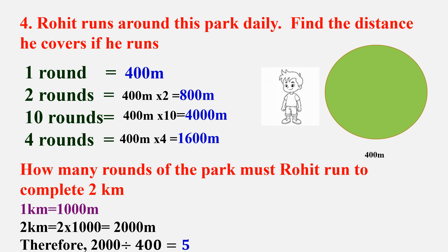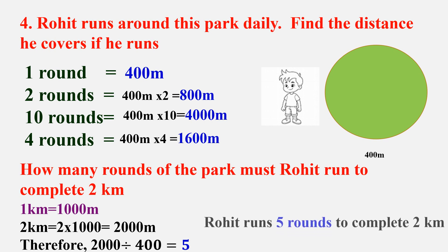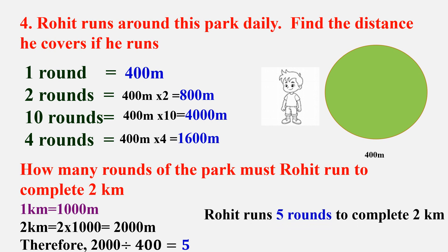Try this mentally. How many zeros are ending in these numbers which can be cancelled? Cancel 2 zeros from 400 and 2 zeros from 2000. What is left? 20 and 4. 20 divided by 4 is equal to 5. So Rohit runs 5 rounds to complete 2 kilometers.